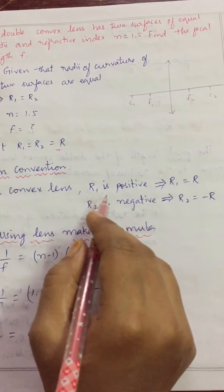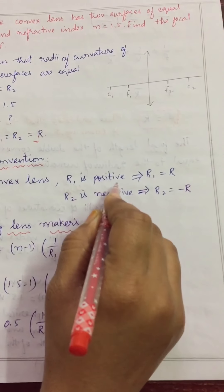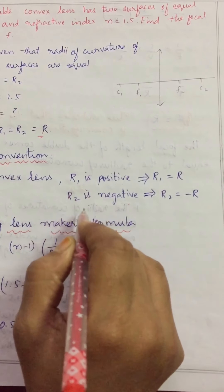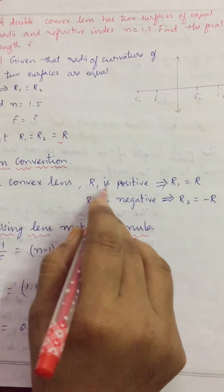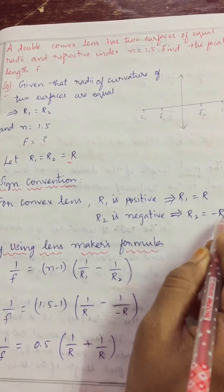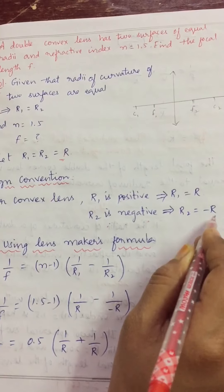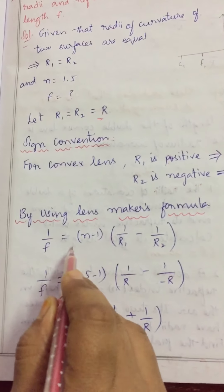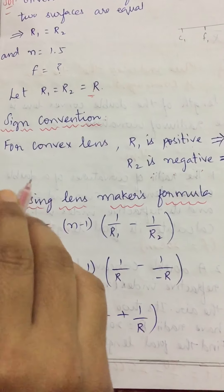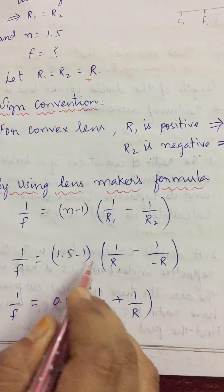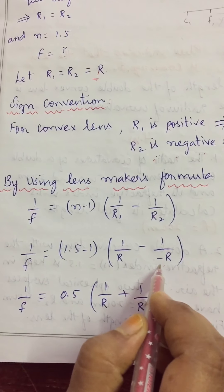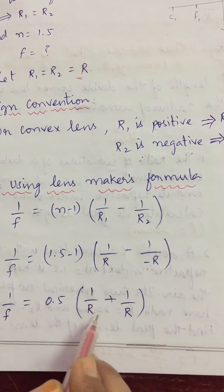For a convex lens, the sign convention is: R1 is positive and R2 is negative — opposite to the concave lens. So R1 = +R and R2 = -R. Using the lens maker formula: 1/f = (1.5 - 1) × (1/R - 1/(-R)). The two negatives multiply to give plus, so we get 0.5 × (1/R + 1/R).